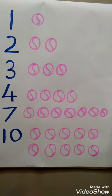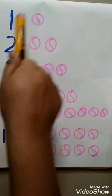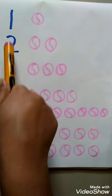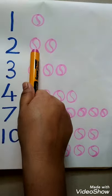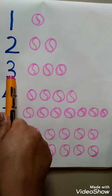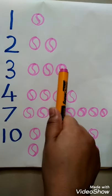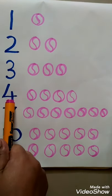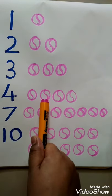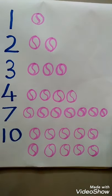Okay children, let us count one more time. Number 1 — count how many balls? 1. Number 2: 1, 2 balls. Number 3: 1, 2, 3 balls. Number 4: 1, 2, 3, 4 — 4 balls.